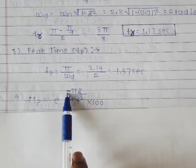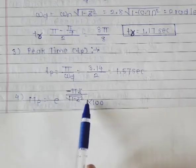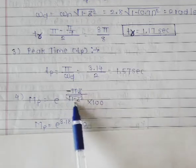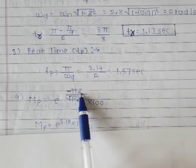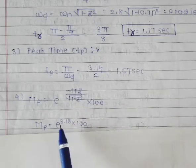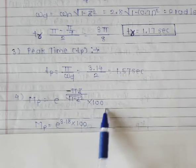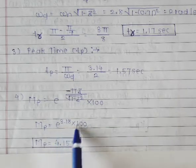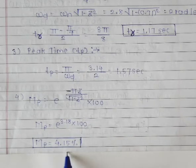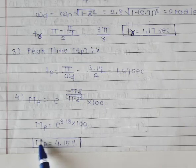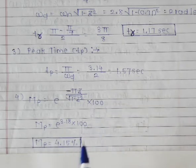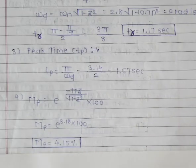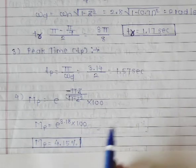After that, find Mp, the peak overshoot. The formula is: Mp = e^(−πζ/√(1 − ζ²)) × 100. Putting in ζ = 0.71, the exponent evaluates to −3.18. Solving e^(−3.18) and multiplying by 100 gives Mp = 4.14%. So the peak overshoot is 4.14%. These are all the four required terms. You need to learn all these formulas well. This was an important problem — thank you.